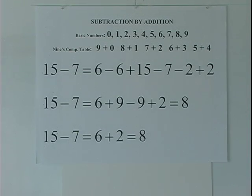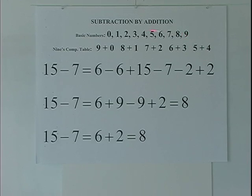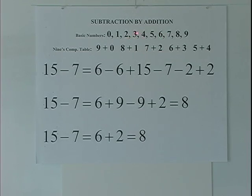In order to define what the nine's complement of a number is, I have to find the pairs of numbers in the ten basic numbers that add up to nine. Nine plus zero is nine. Eight plus one is nine. Seven plus two is nine. Six plus three is nine. Five plus four is nine. So there are five pairs of basic numbers that add up to nine.